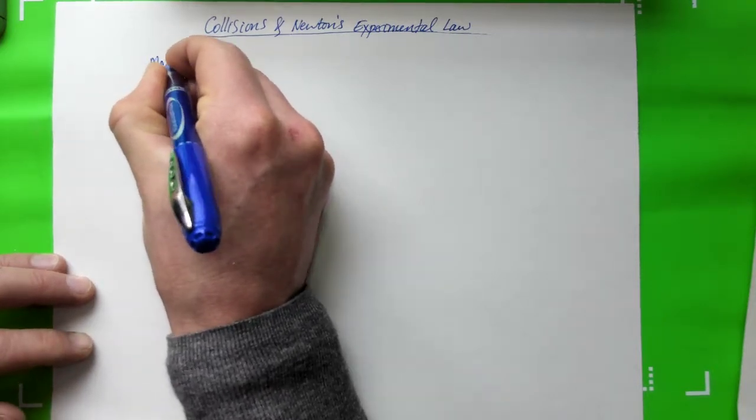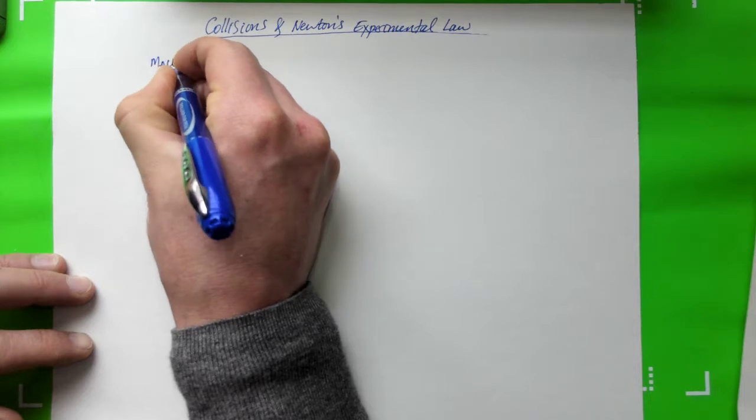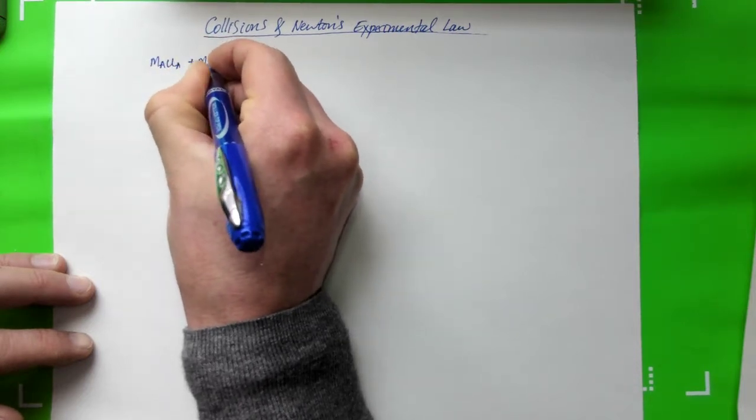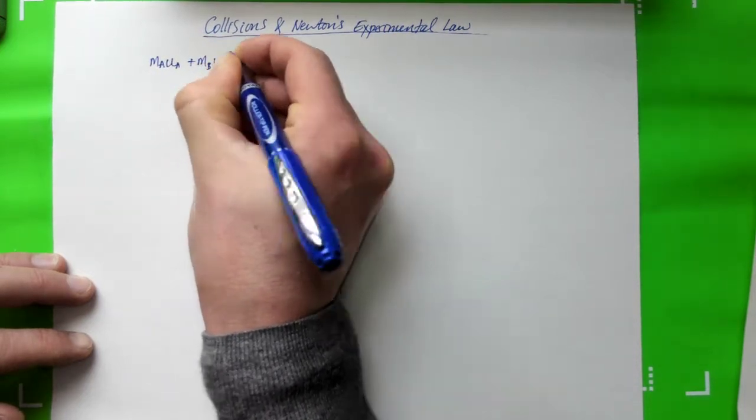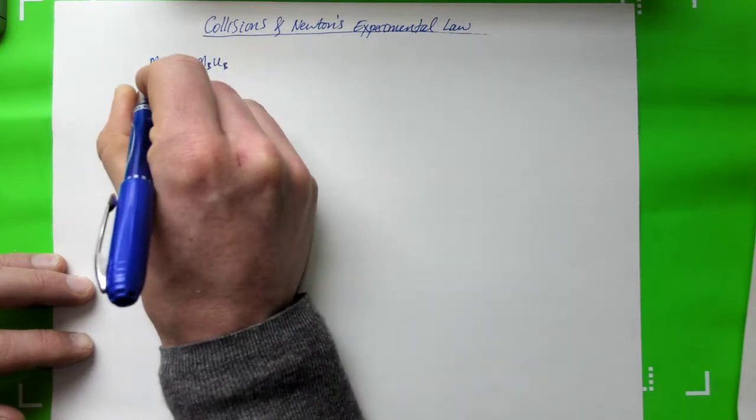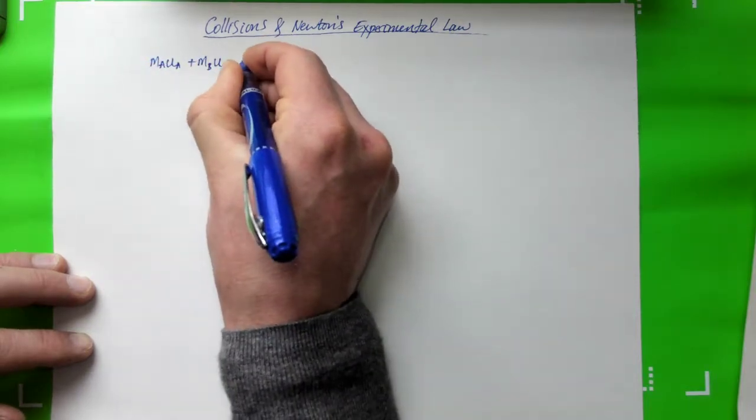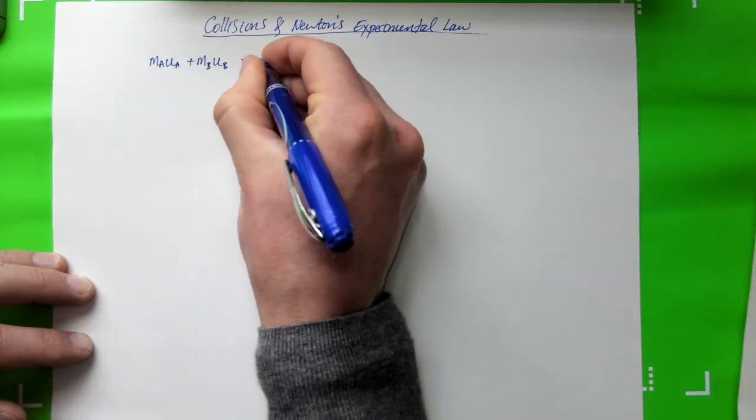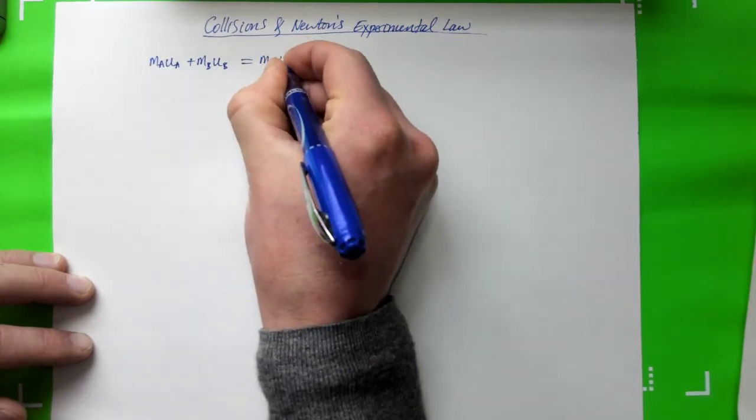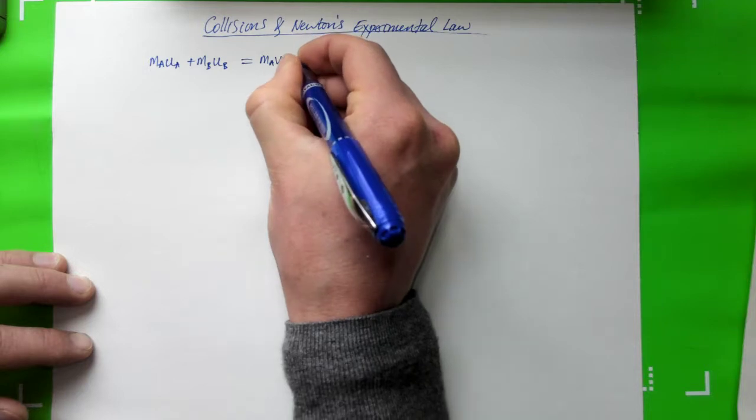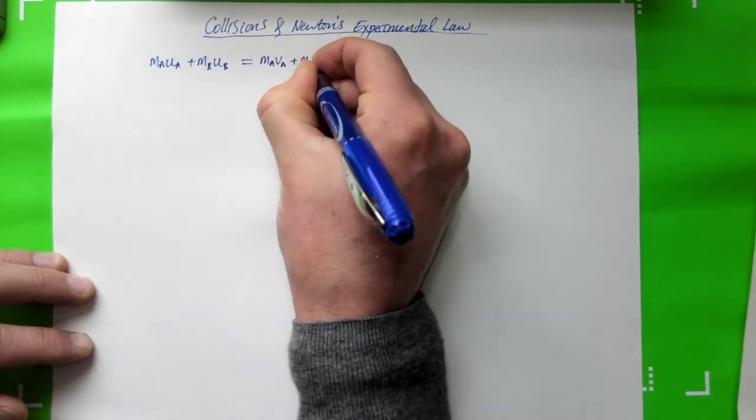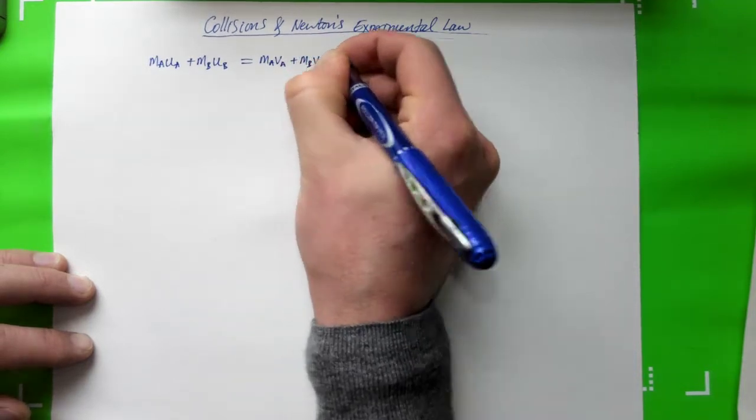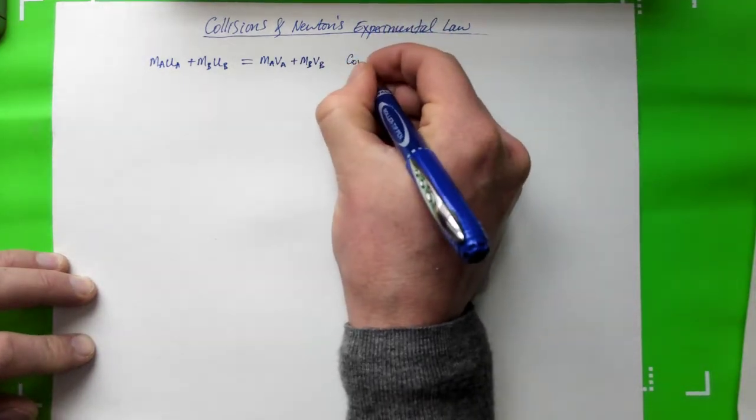So in general we know MaUa plus MbUb equals MaVa plus MbVb, where Ua and Ub are the speeds of object A and object B before the collision. We know that's the total momentum before the collision and it's equal to the total momentum after the collision, where we're using V to be the speeds after and U to be the speeds before. So this is the conservation of momentum.